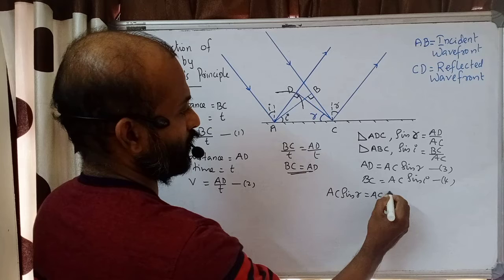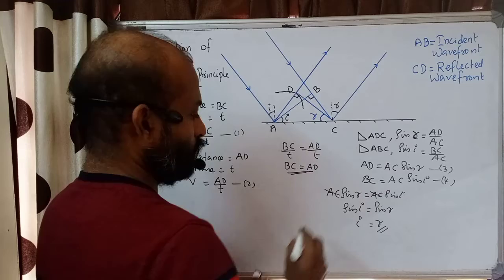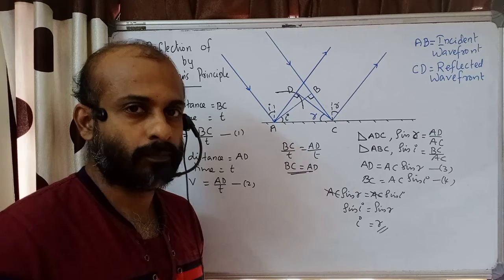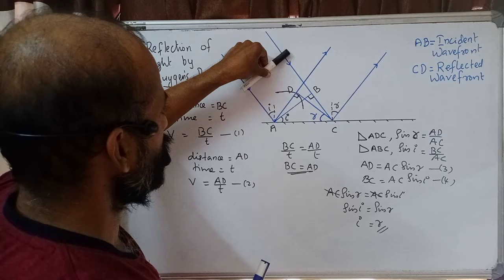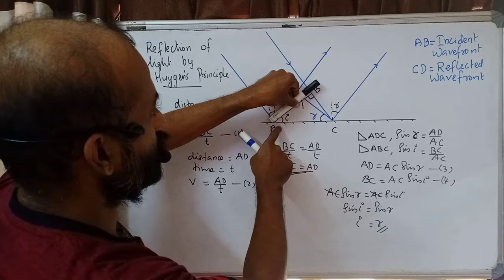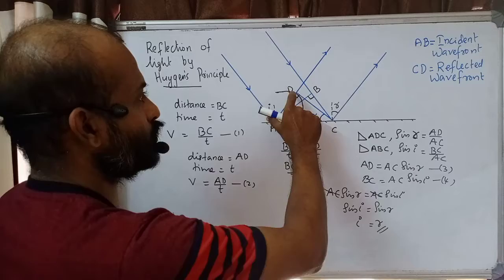We know that BC = AD, so we can equate the right-hand sides: AC sin R = AC sin I. The AC cancels, giving sin I = sin R, and therefore angle I = angle R — that is, angle of incidence equals angle of reflection. This is the law of reflection of light, proved using Huygens principle.